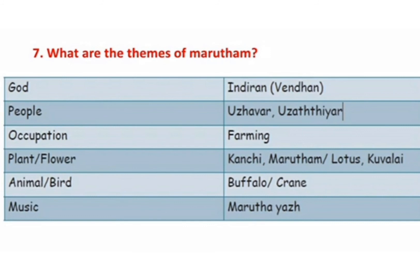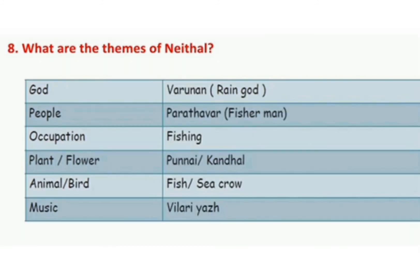What are the themes of Neidhal? God: Varunan, the Rain God. People: Parathavar, that is fishermen. Occupation: Fishing. Plant and Flower: Punnai, Kondal. Animal: Fish. Bird: Sea Crow. Musical Instrument: Villari Yawl.